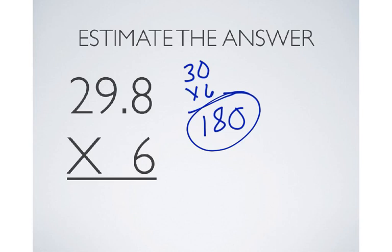When we actually solve the problem, we'll use that 180 estimate to decide where the decimal point goes. After multiplying the two numbers, I get 1788 as my answer.